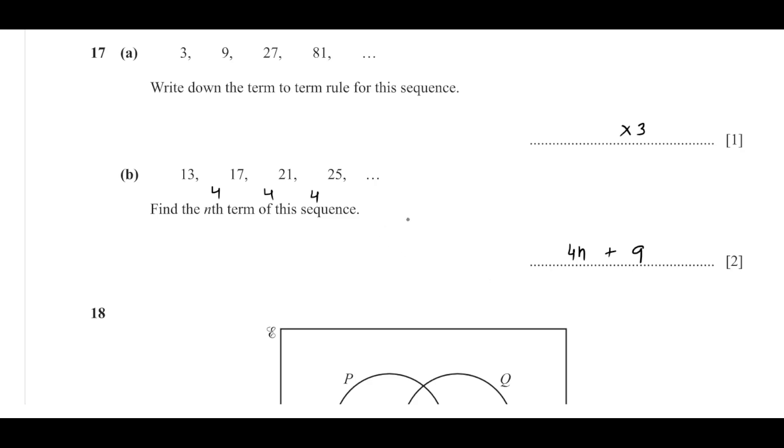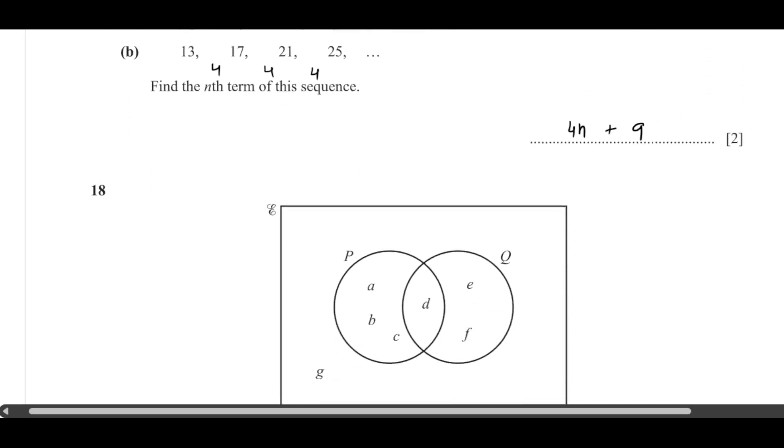So it is 4n plus 9. You can cross-verify this by using the value of n as 1, 2, 3, and so on.